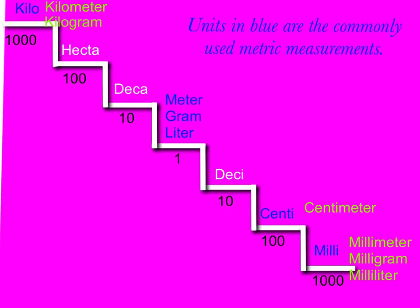Let's review a few of the important things you need to remember from this video. First, you can convert metrics by thinking of a set of stairs, or steps. You can convert a meter, a gram, or a liter into a larger unit, like kilometer or kilogram, by dividing. You divide by a thousand if you're going to convert to kilos, because kilo means a thousand.